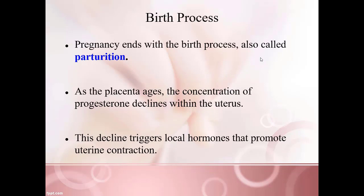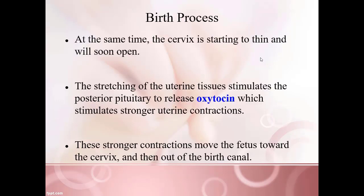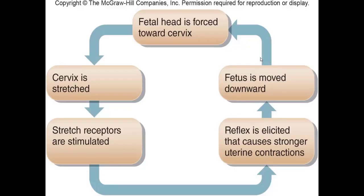Now we have a fully formed fetus ready to be born, leading to the birth process, technically known as parturition. As the placenta ages, it becomes less effective, and progesterone levels start to fall. This decline in progesterone triggers hormones that cause uterine muscles to contract. As this happens, the cervix will start to efface — thin out — and eventually open. The stretching of the uterine muscles causes the posterior pituitary gland to release oxytocin, which stimulates even stronger uterine contractions. If you've had labor induced, you were most likely given Pitocin, a synthetic form of oxytocin.